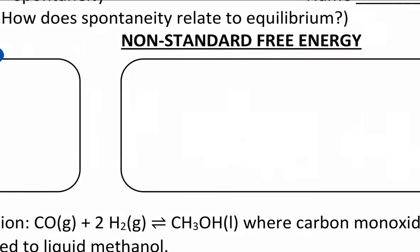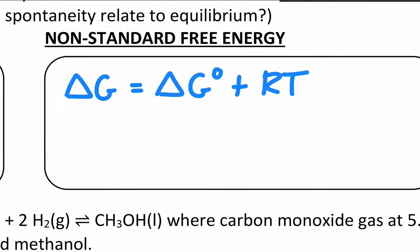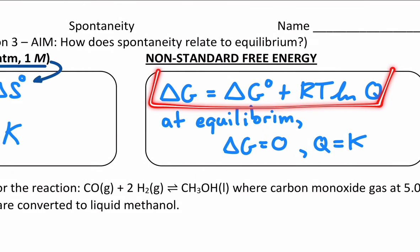But we're also going to look at non-standard conditions. Non-standard conditions are delta G without that superscript zero. And they're calculated by using the standard value, the delta G standard plus RT times the natural log of the reaction quotient. And you could say, well, what's true at equilibrium? Remember, at equilibrium, we said this in the previous lesson, delta G is zero. And that's when Q is equal to K.